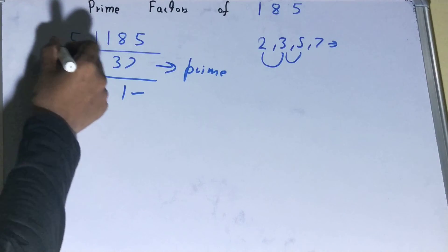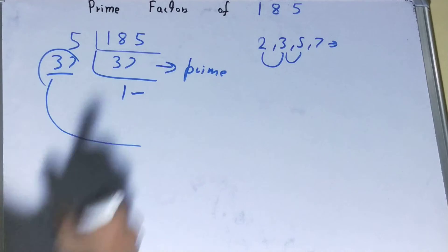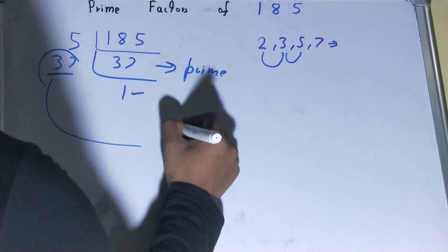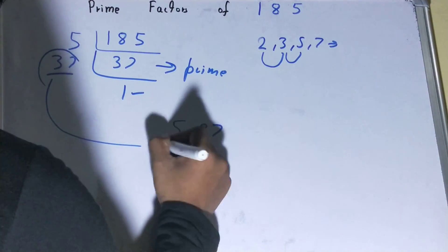value as 1. Once you get 1, the work is done, and whatever you have on the left-hand side will be the set of prime factors for the number 185, that is 5 × 37. If you want